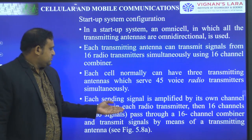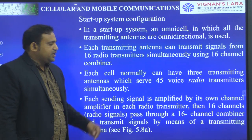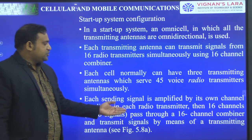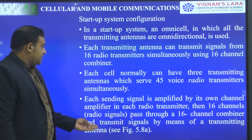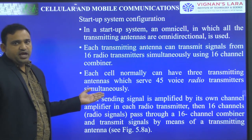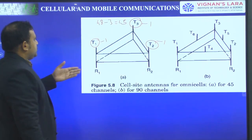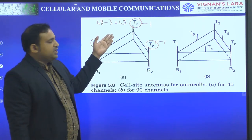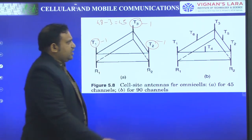Each sending signal is amplified by its own amplifier in each radiotransmitter. Then 16 channels pass through a 16-channel combiner and transmit signals by means of a transmitting antenna as shown in figure A, which supports 3 antennas. 16 times 3 is 48, minus 3 setup channels equals 45 voice channels.